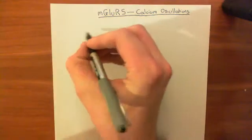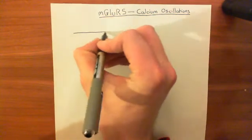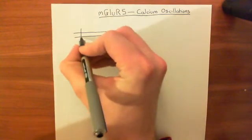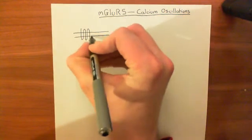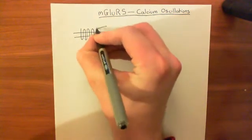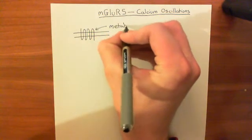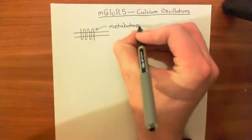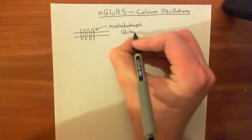The mGluR5 is a G-protein-coupled receptor, or a 7-transmembrane receptor, so it has 7 membrane-spanning alpha helices. This is the metabotropic glutamate receptor, and its endogenous ligand in the body is glutamate.